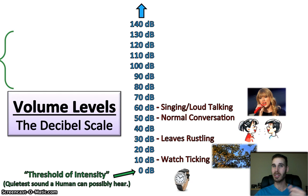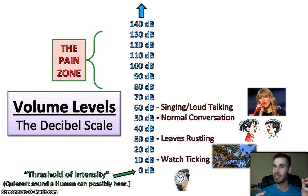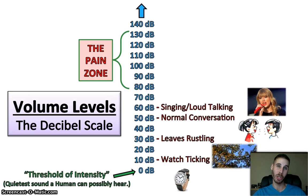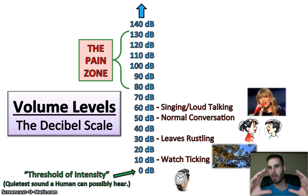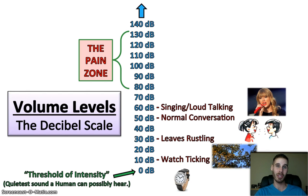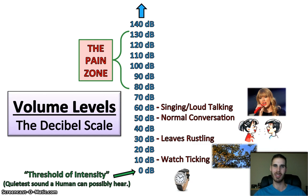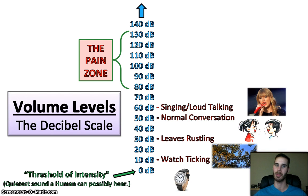As we get above 60 decibels, we're going to start to enter what I like to call the pain zone, which is also what I call my home gym. The pain zone is a part of this spectrum of sound where you're going to feel pain when you hear these noises at the approximate distances that we'll be talking about. All of these distances are assumed to be the normal distance that you are usually away from these sources. We're not being exact here with these decibel levels, but we're getting as close as we can to realistic numbers.